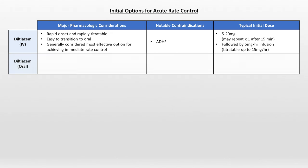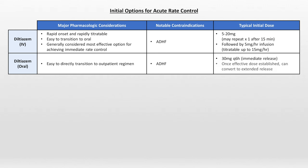The next option is oral diltiazem. This is nice because it is extremely easy to transition the patient to an outpatient regimen. Once again, acute heart failure is a contraindication. A common starting dose is 30 mg Q6 hours of immediate release. Once an effective dose is established, it can be converted to once-daily extended release upon discharge — or even before discharge, if a prolonged hospitalization for an unrelated reason is anticipated.